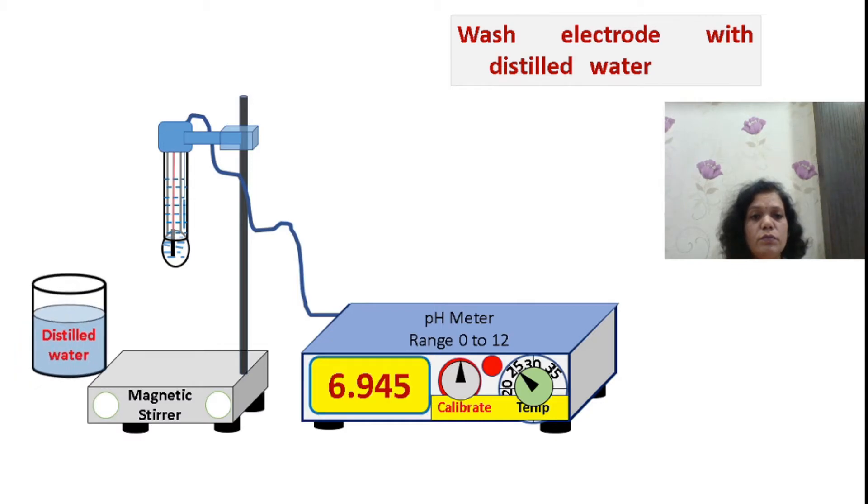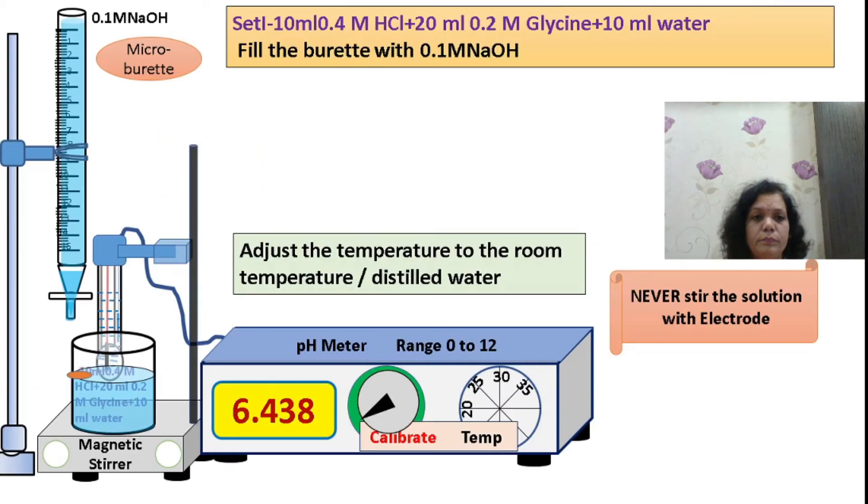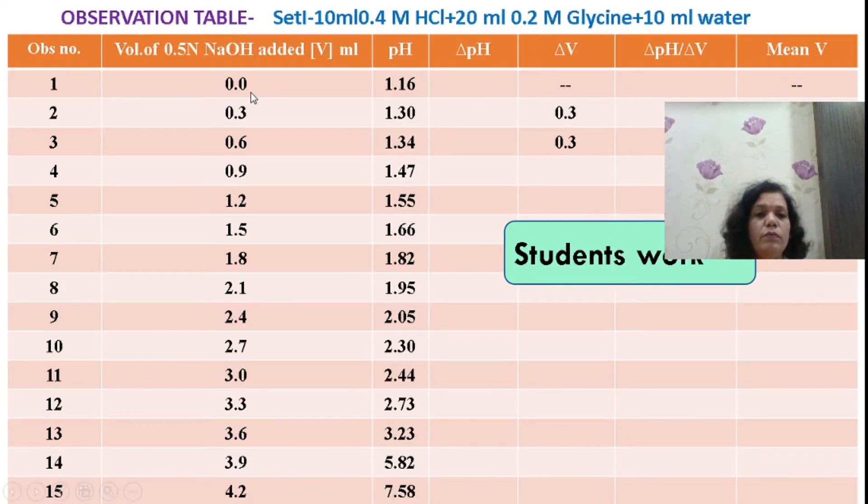This is the experimental setup: a burette filled with 0.1M NaOH, and a beaker containing 0.2M glycine solution (20 ml) plus 10 ml water and 10 ml of 0.4M HCl. This solution with a magnetic stirrer is ready and attached to the pH meter. Measure the pH every time during titration, with every 0.3 ml addition of NaOH. Use the magnetic stirrer and measure pH before and after each 0.3 ml addition of NaOH.